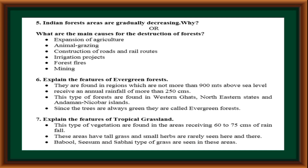Explain the features of tropical grassland. This type of vegetation is found in areas receiving 60 to 75 cm of rainfall. These areas have tall grass and small herbs are rarely seen here and there. Babul, Shisham, and Sabai types of grass are seen in these areas.